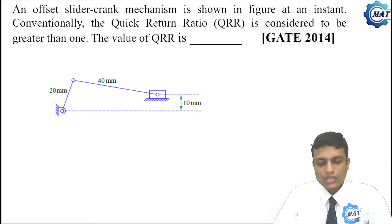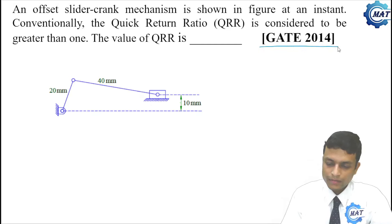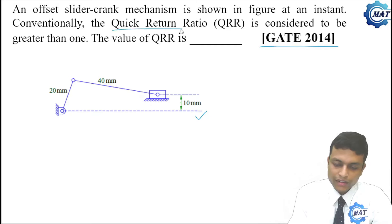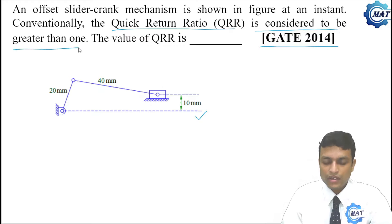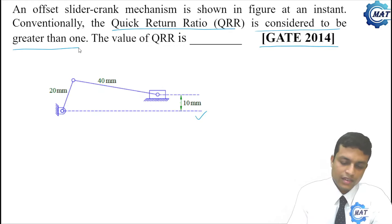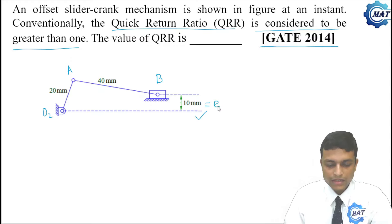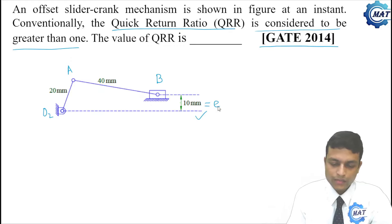Let us solve the problem which has been asked in GATE 2014. An offset slider crank mechanism is shown in the figure. Conventionally, the quick return ratio is considered to be greater than 1. Given: O2A (crank) = 20 mm, AB (connecting rod) = 40 mm, and offset E = 10 mm. We need to find the value of QRR. Let us locate the two extreme positions of B, and since point A moves on a circle, let us draw that circle first.